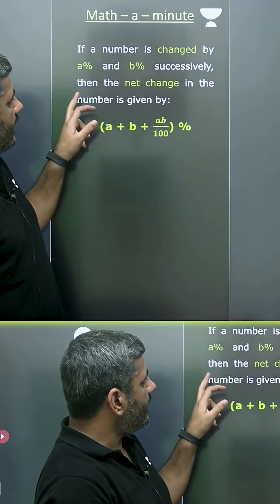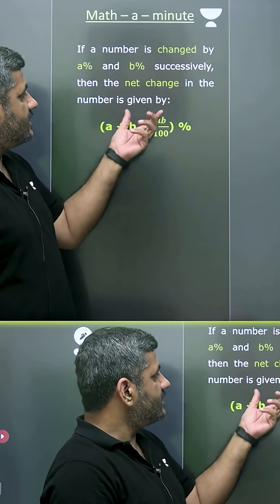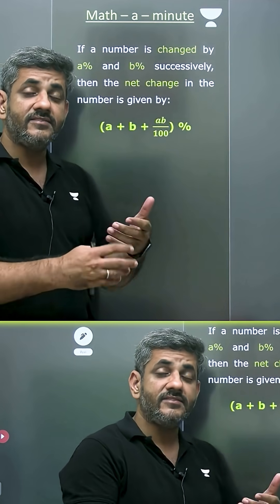If a number is changed by A% and B% successively, the net change is given by this formula. Successive means one after one.